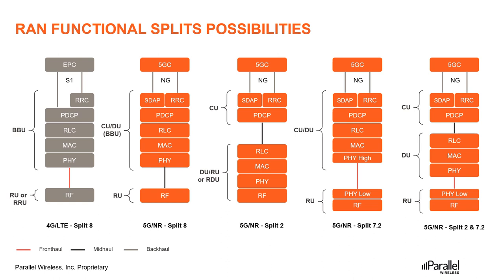From an ORAN point of view, split 7.2 will be used for front-haul. In addition, split 2 may or may not be there depending on the architecture.